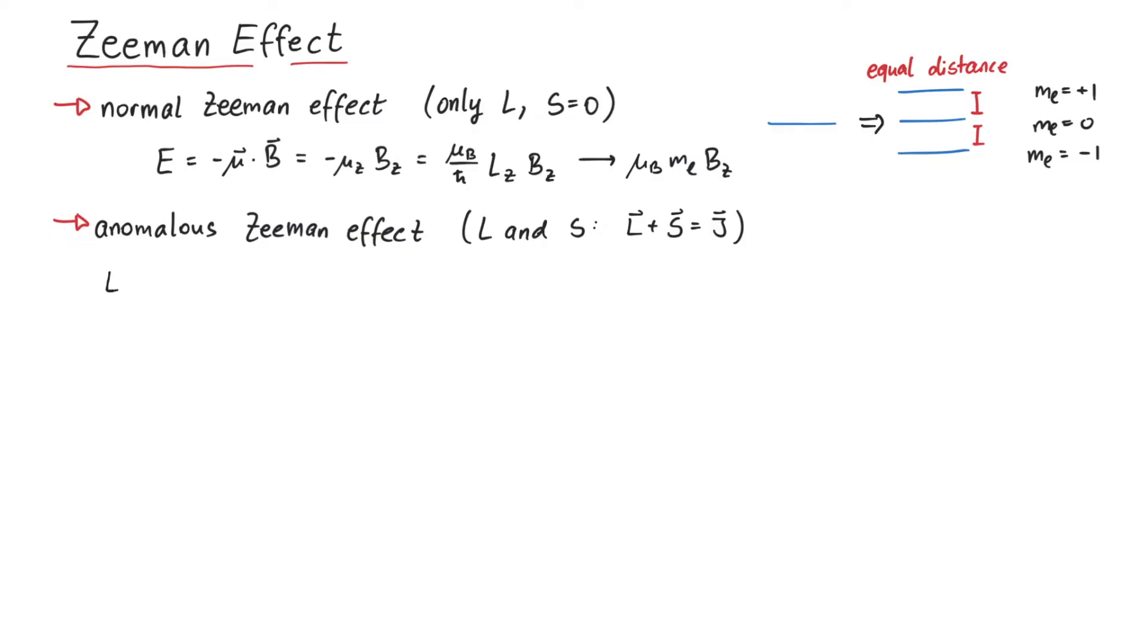By doing the same calculations as before, we get the result that the energy shift is given by e over 2m times lz plus gs sz times the magnetic field.